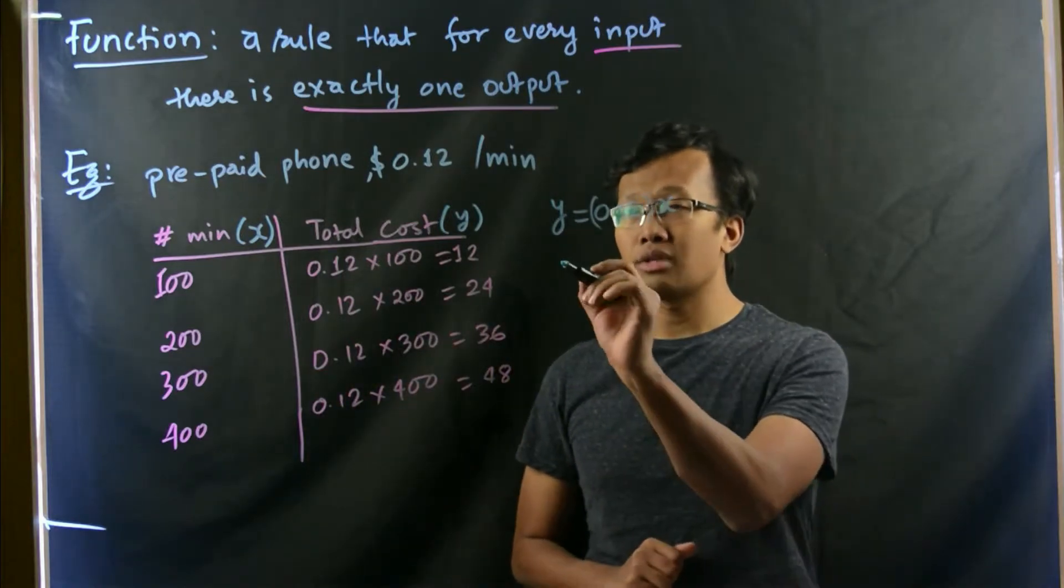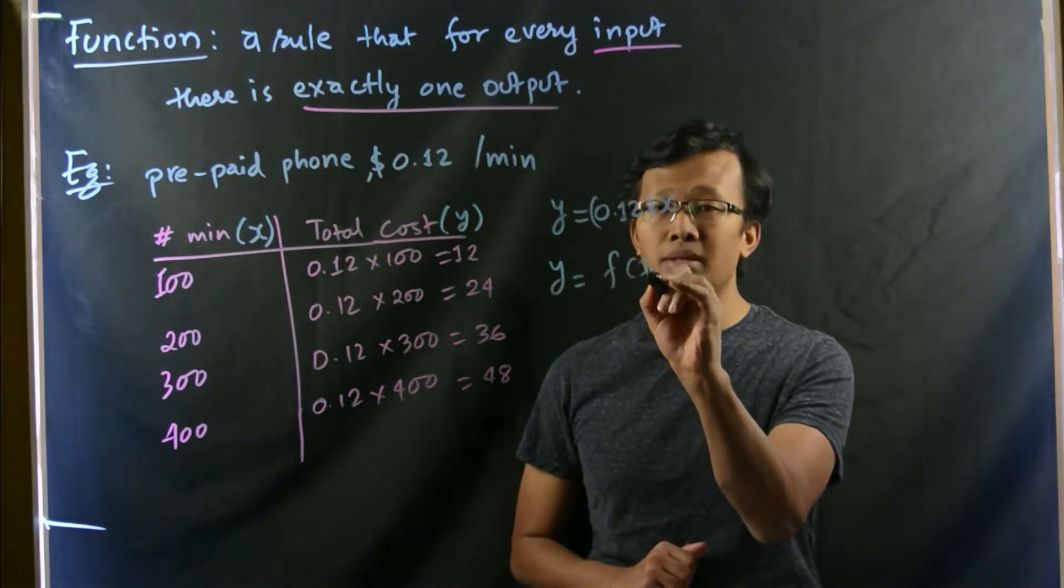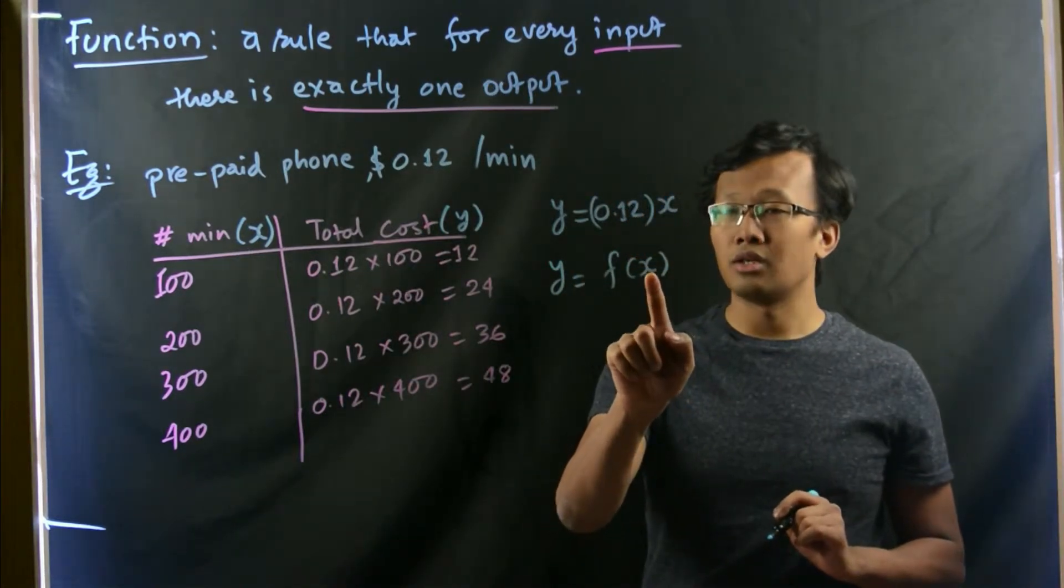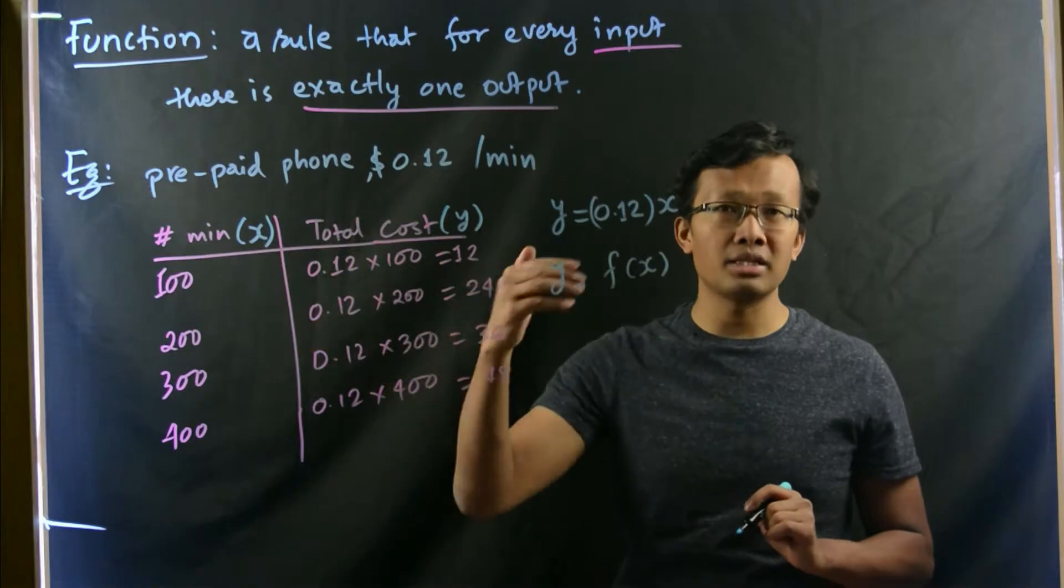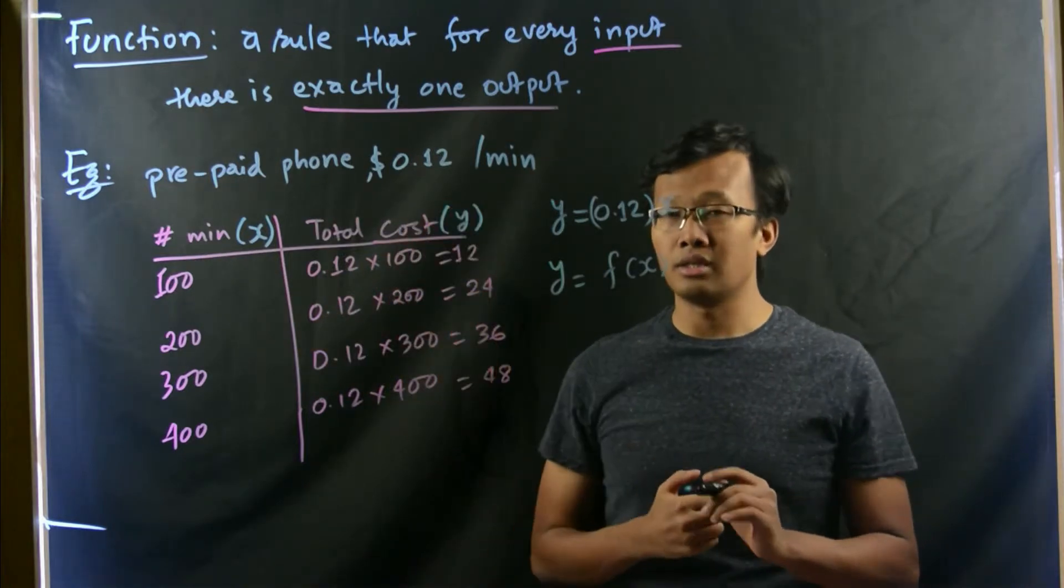And this also can be written as y equals to f of x, simply meaning function of x, where x is the number of minutes that you used in a month.